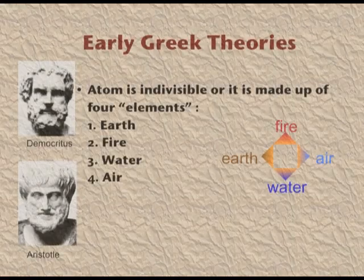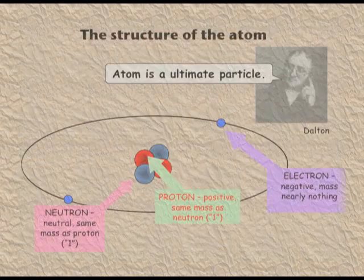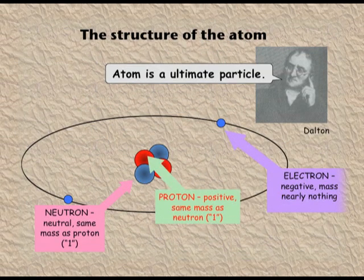Today we will study about the structure of atom, Unit 2 of Class 11th. Early Greek theories by Democritus and Aristotle stated that the atom is indivisible, or that the atom is made up of four elements: earth, fire, water, and air. John Dalton also said that atom is the ultimate particle of matter.